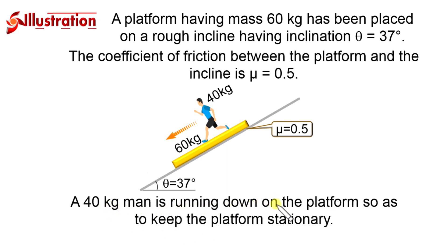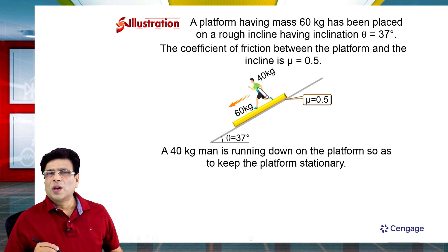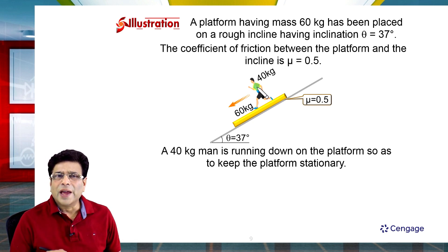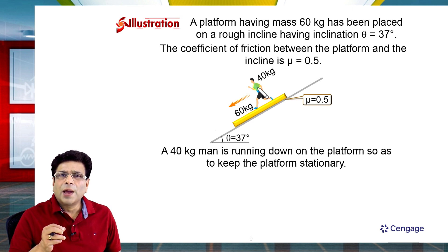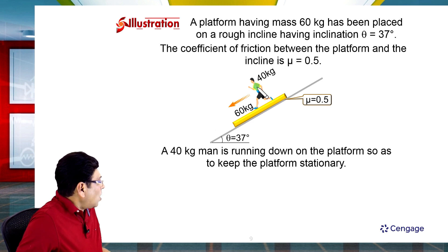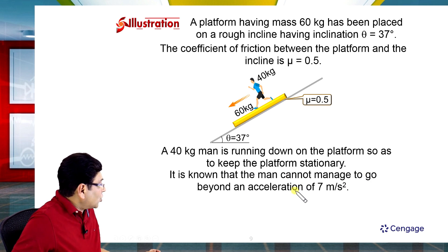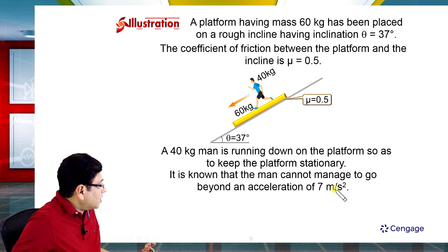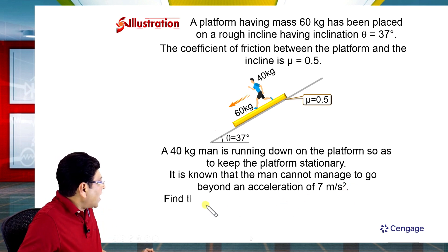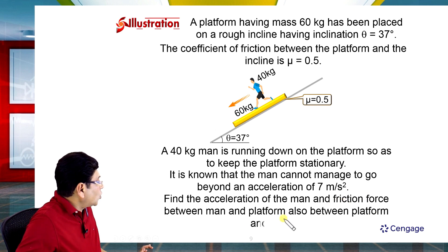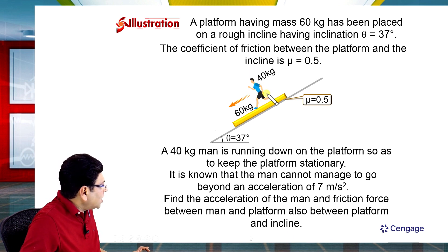A 40 kg man is running down on the platform so as to keep the platform stationary. It is known that the man cannot manage to go beyond an acceleration of 7 meters per second squared. We need to find the acceleration of the man and the friction force between the man and platform, and also between the platform and the inclined surface.